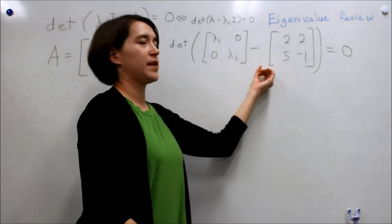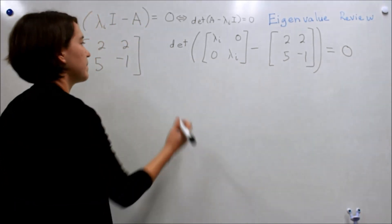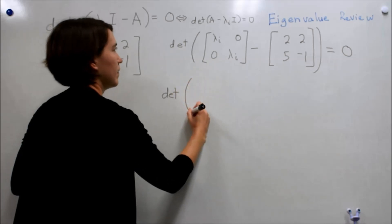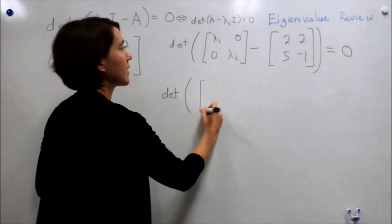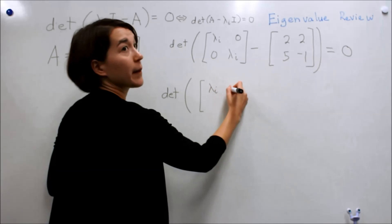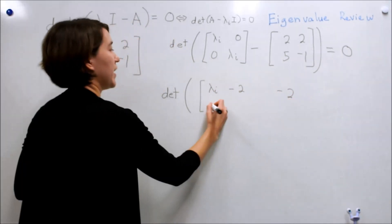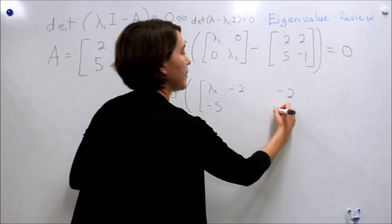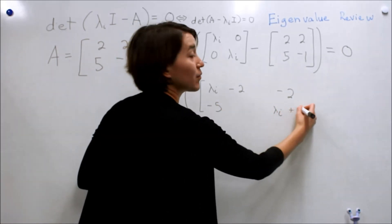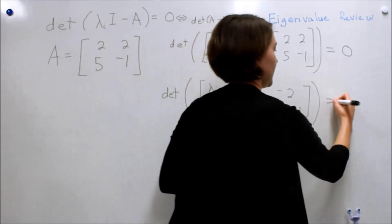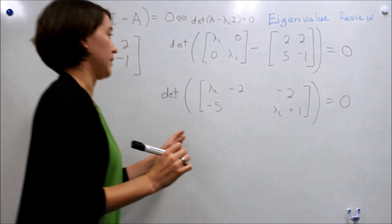We need to solve this more. So let's put these two matrices together, subtract them. We will get lambda minus 2 here, minus 2 here, minus 5 here, and lambda plus 1 here. That all equals zero.